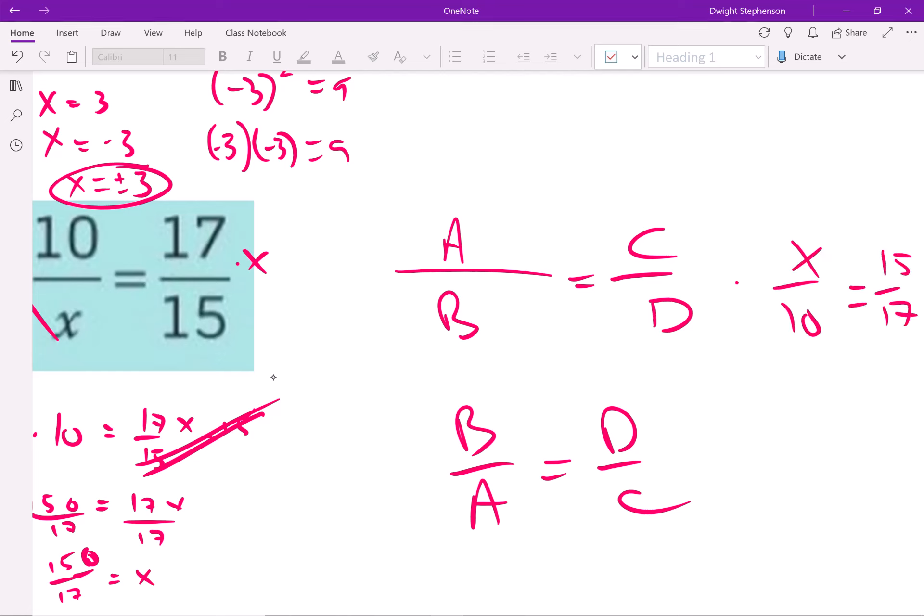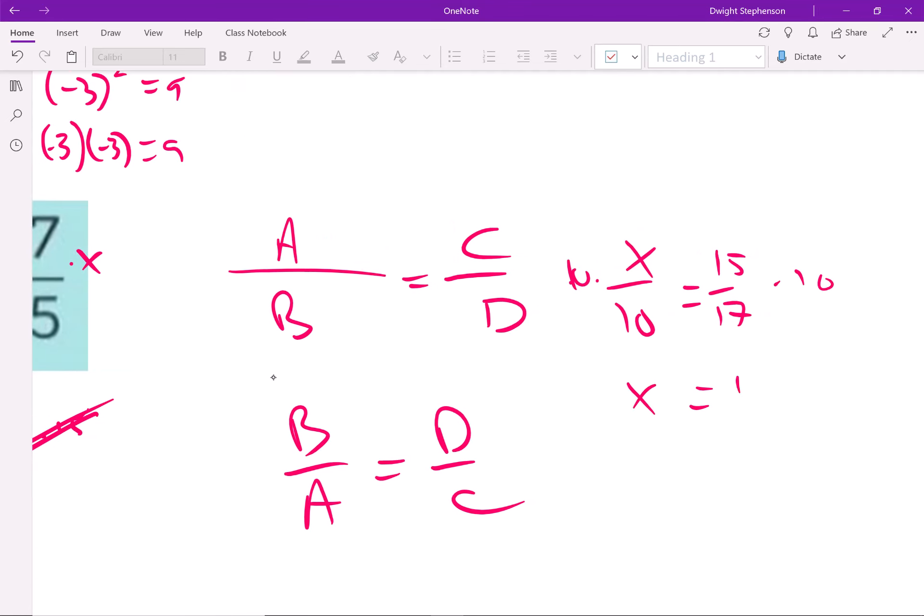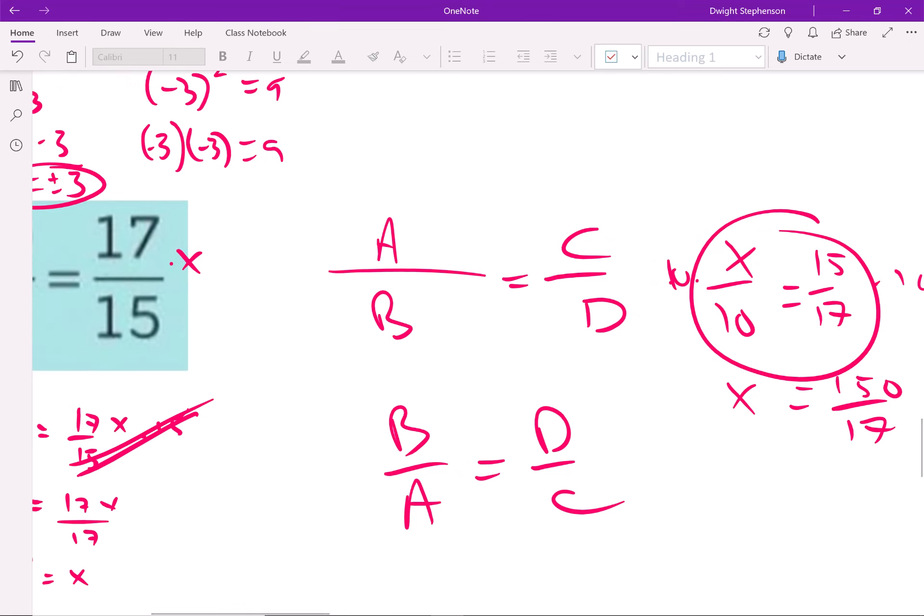And then solve from there. It's a lot easier. All you got to do is multiply both sides by 10. And notice you're going to get the same thing. So that's kind of an easier way when you have two fractions set equal to each other.